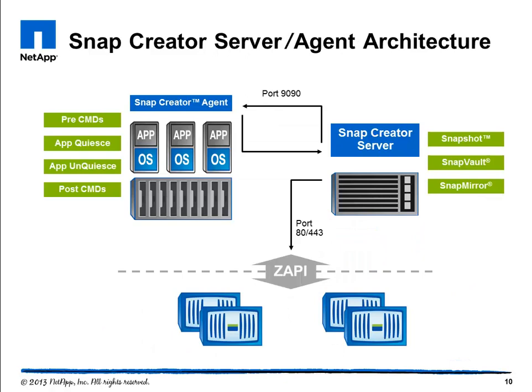Here's a look at how the Snap Creator server and agent work together. Snap Creator actions are initiated by the server. Communication to the agent, by default, occurs on port 9090, but this is fully customizable — use any port that you like. The agent handles application quiesce and unquiesce commands, as well as other types of pre- and post-commands. API calls to the storage system occur on the Snap Creator server over port 80 or 443, and handle all snapshot, SnapVault, and SnapMirror type functions before committing changes to storage devices.